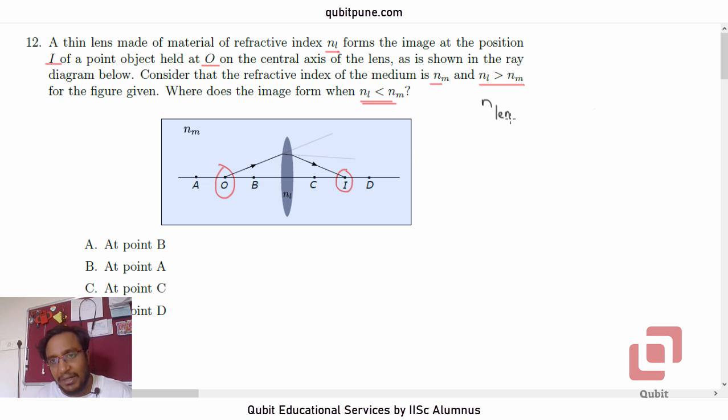So the refractive index of the material of the lens is greater than that of the air. So that is the usual case which they have shown. That is why the ray is bending inwards.